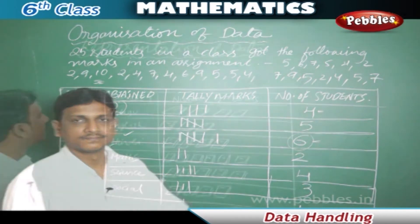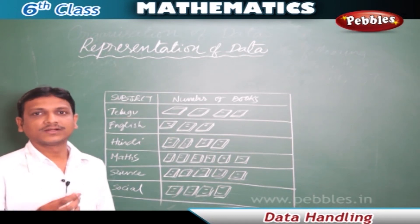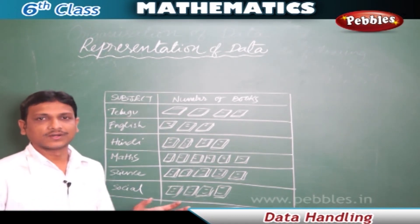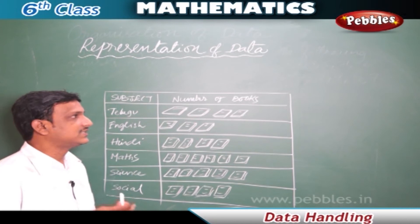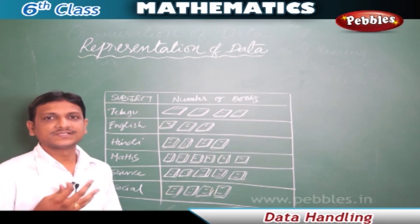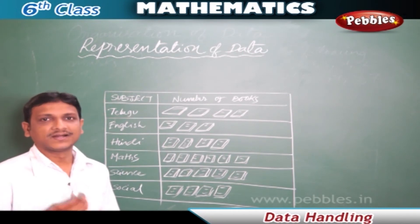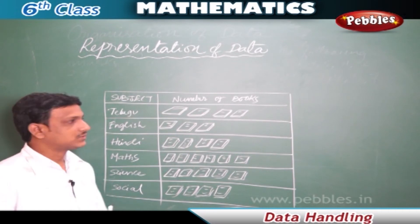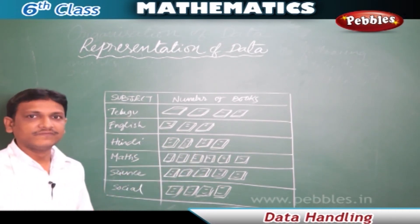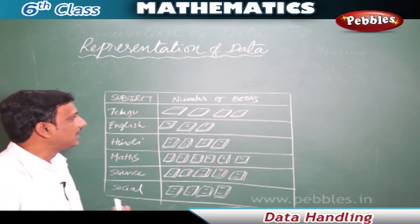In the previous example we saw how to organize raw data using a frequency distribution table. Now we will see how to represent data in a better and more convenient form. We can represent data using pictographs and bar graphs. A pictograph is a kind of table in which we use pictures to represent the data.